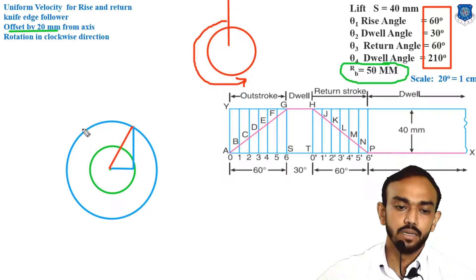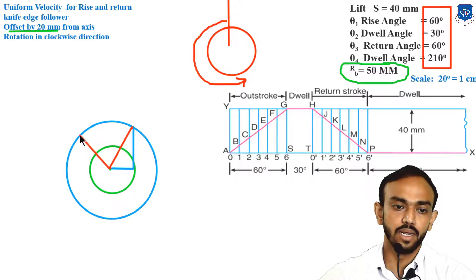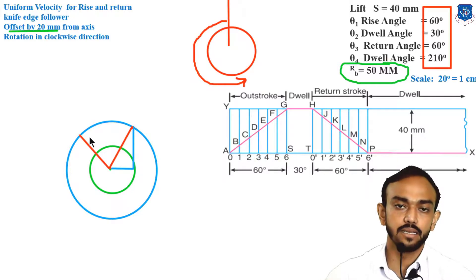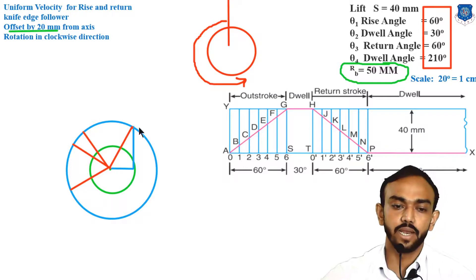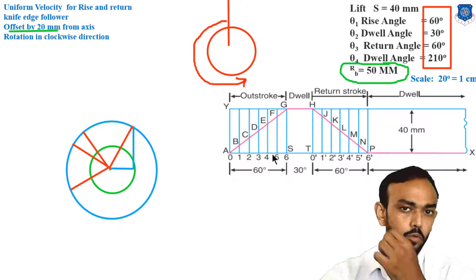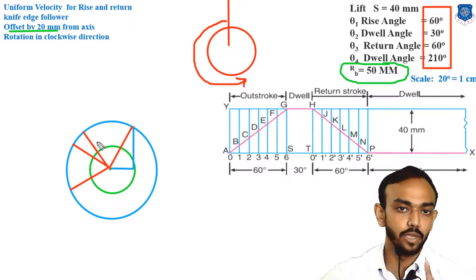Now divide this circle into the four angle partitions: 60, 30, 60, and 210 degrees. Remember, when dividing the circle into these four parts (theta 1, 2, 3, 4), do not extend the lines outside the base circle — make lines up to the base circle only. After dividing the circle into the four angle sections, divide each of the rise and return portions into six parts. But don't draw lines to the center here, because we are going to draw tangents instead.